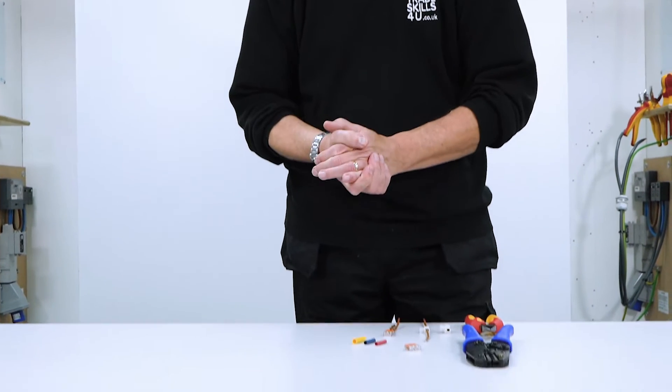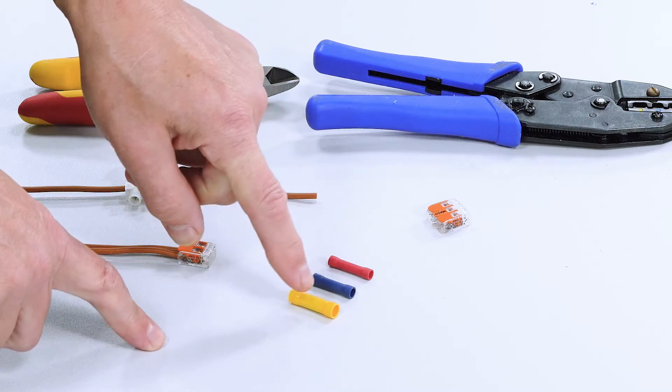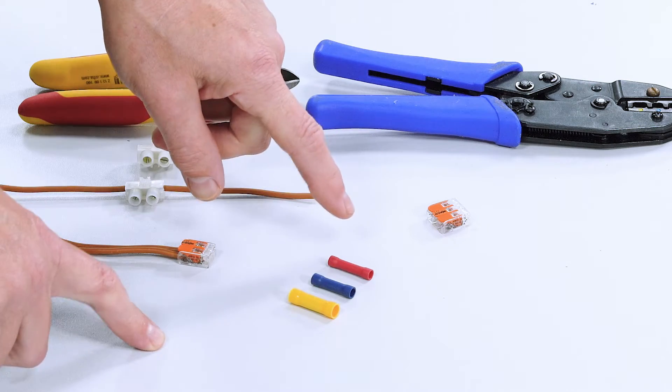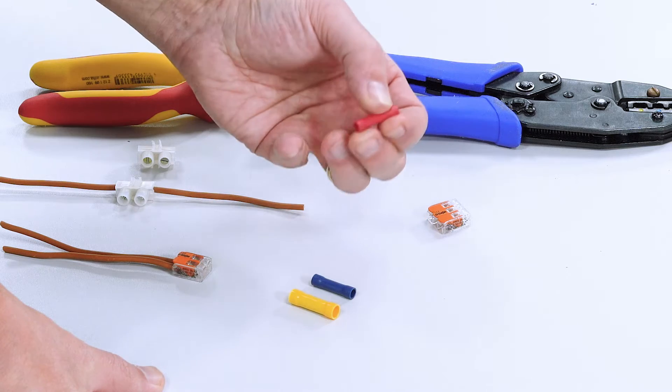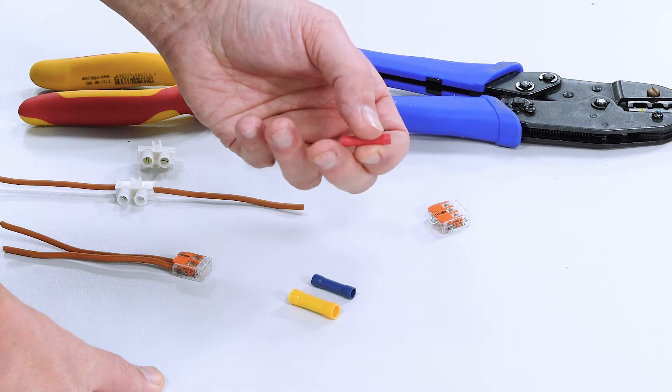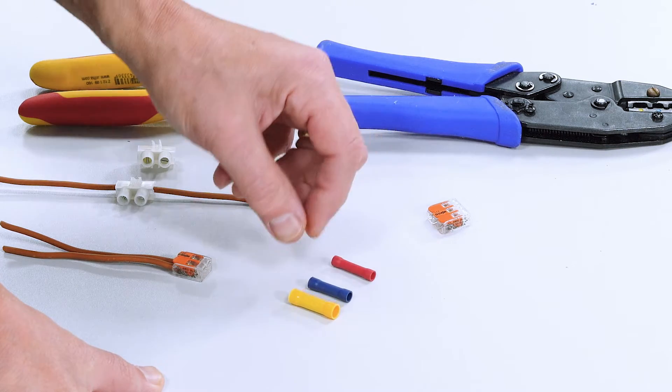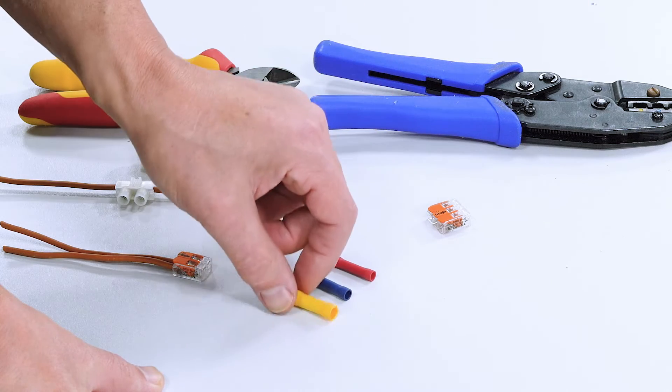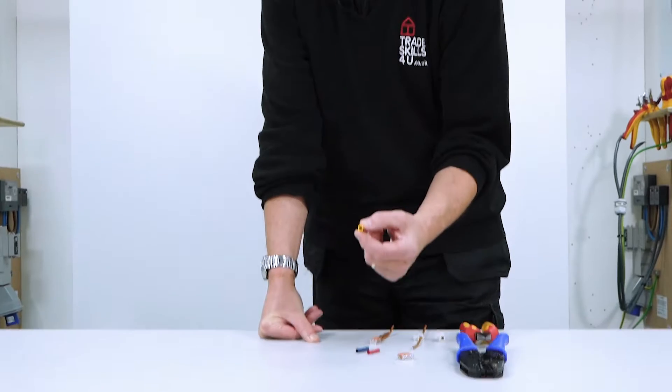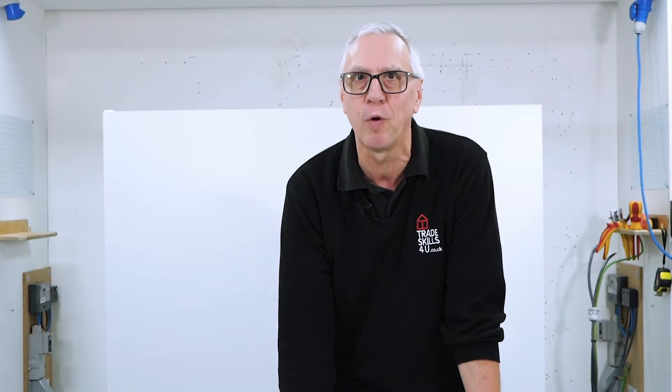And the method I'm going to show you today is by using these inline crimps. Now you'll notice we've got three colors here. The red crimp is for cable sizes of 1 and 1.5 millimeters squared. The blue is for 2.5 millimeters squared. And the yellow is for 4 and 6 millimeters squared cable. Today I'm going to be using the blue one for 2.5.